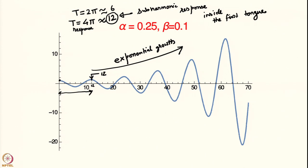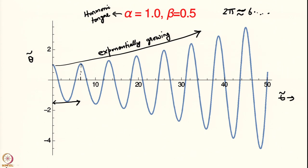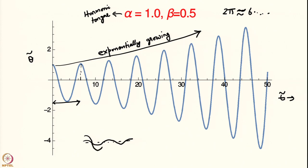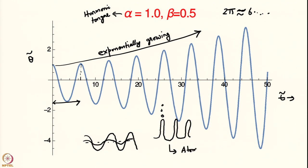What does this exponential growth lead to? This is where the engineering application comes in. If we have a Fourier mode on the interface and we are inside one of the unstable tongues, the amplitude of the Fourier mode grows exponentially — bigger and bigger with time. Eventually it causes the production of jet-like structures from the interface, and there will be droplets ejected from the tips of these jets. This is where the application of atomization comes in.